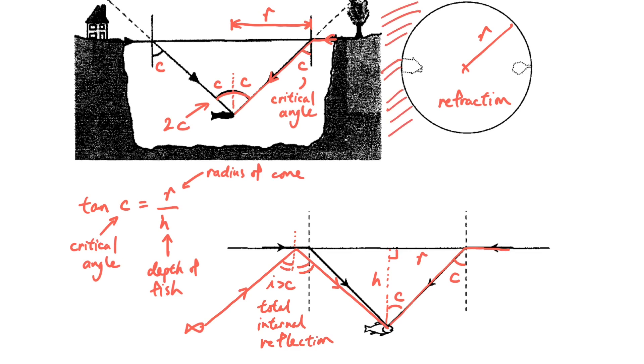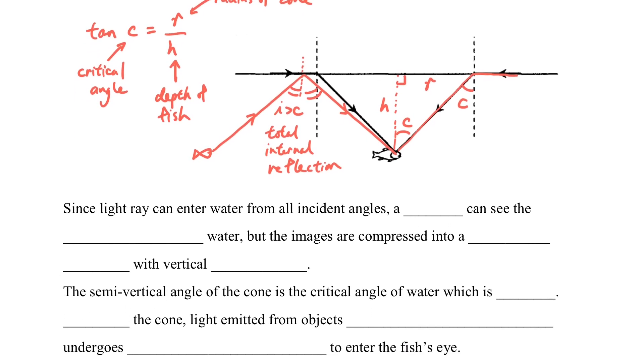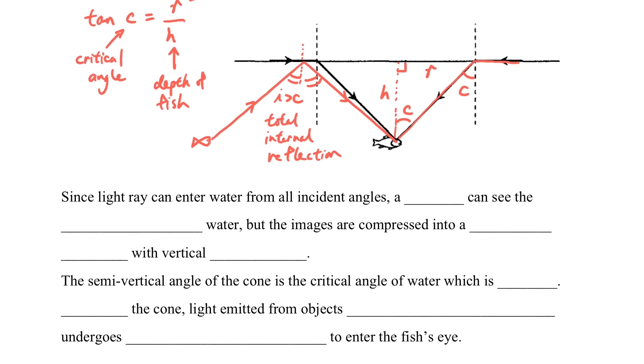And this also explains why outside this circle is dark. Because actually it's the image under the sea, which is the image of the seabed. So the inside circle is the light outside the water, and outside the circle is the light under the sea.